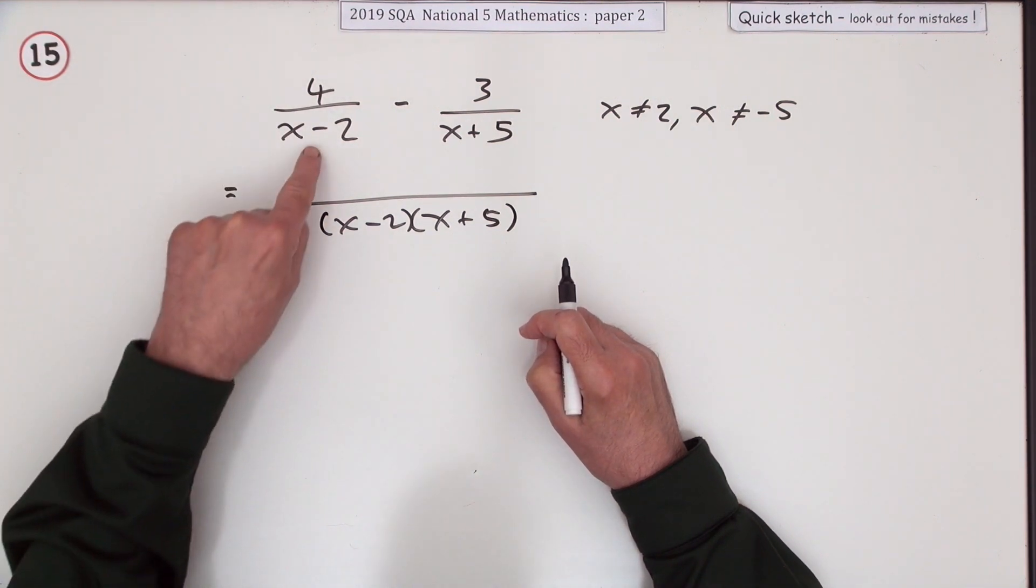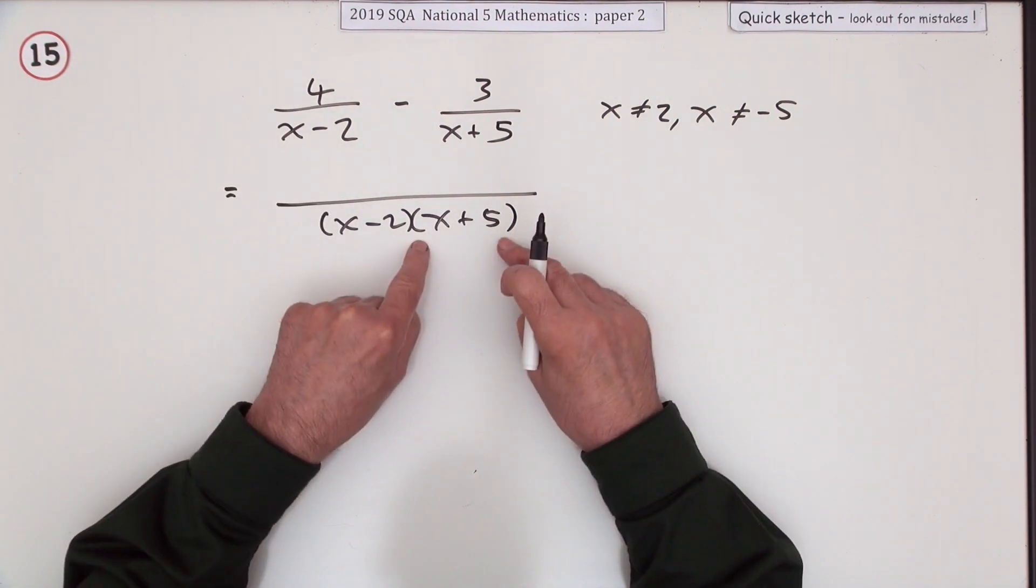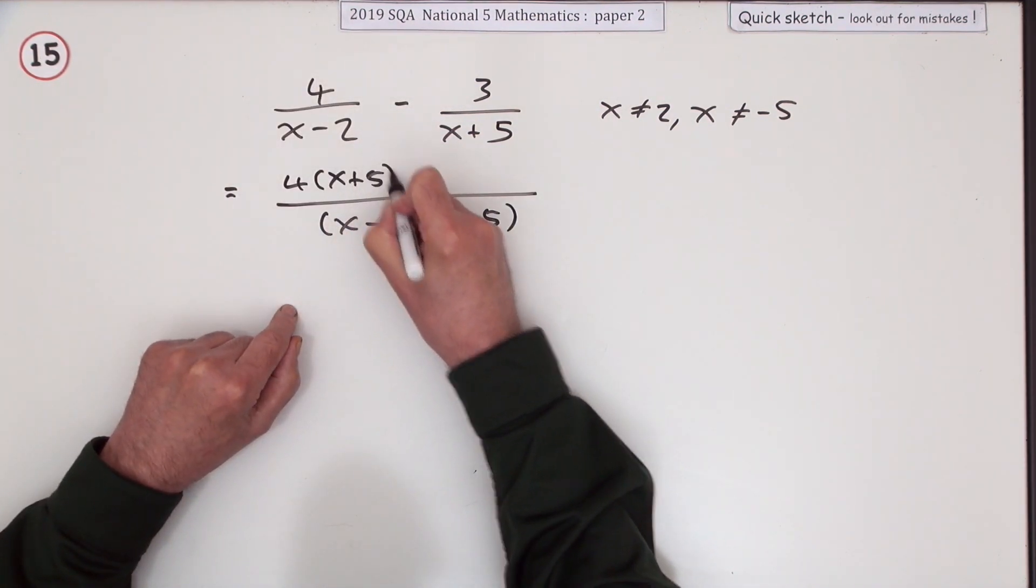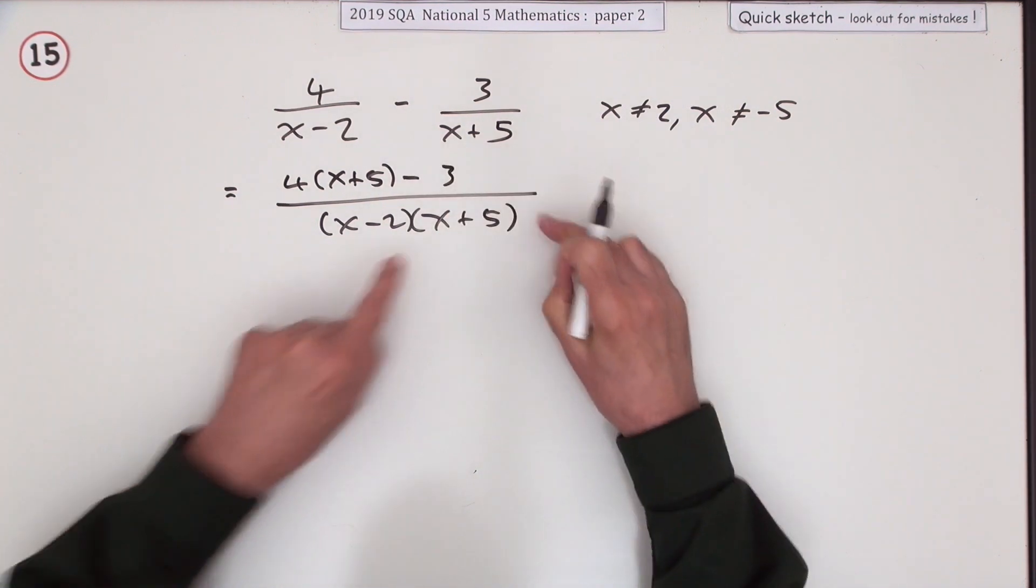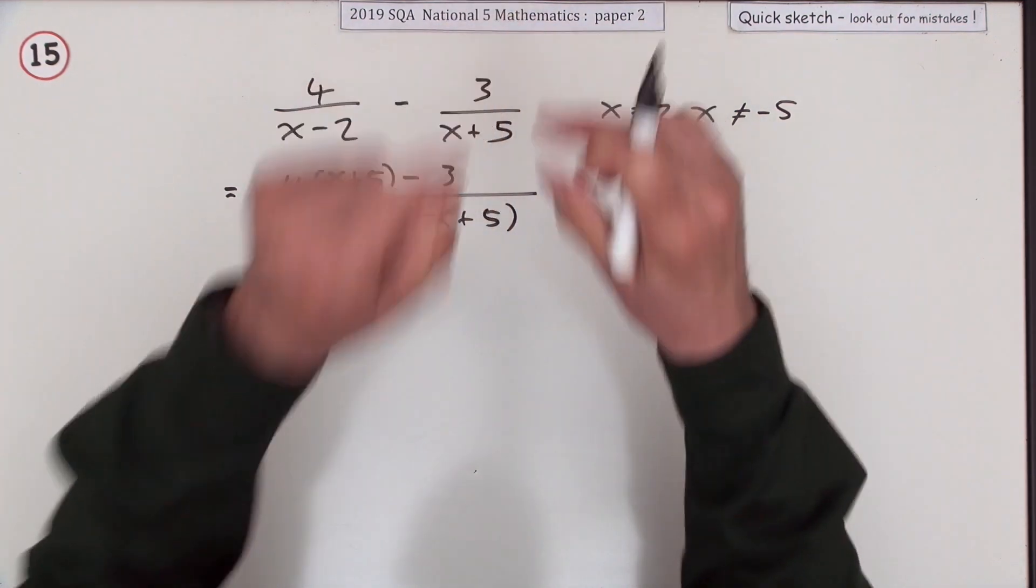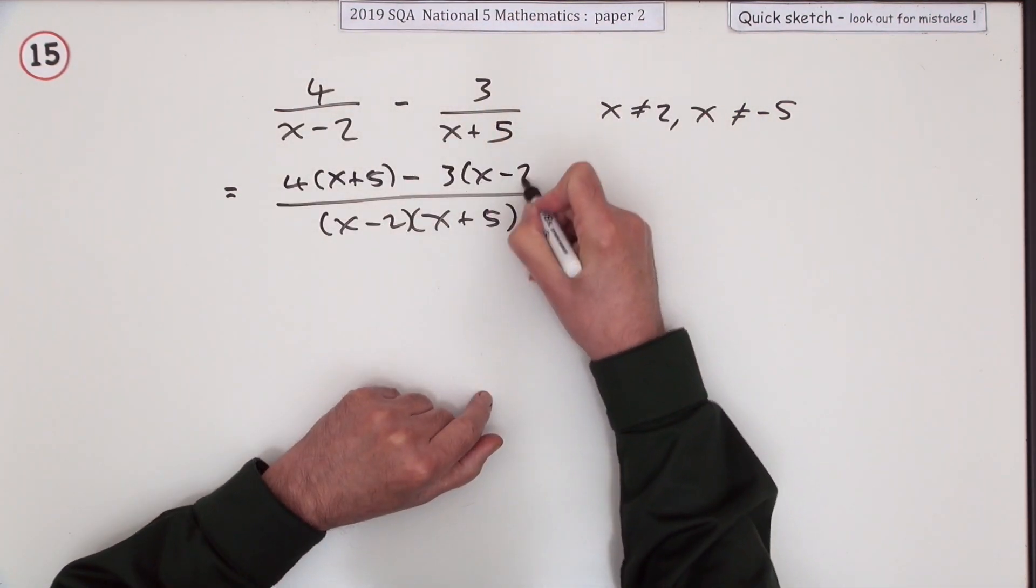You'll have to change the numerators accordingly. This denominator has been multiplied by X+5, so the top has to get multiplied by X+5. Minus - this denominator has been multiplied by X-2, so the top will also have to be multiplied by X-2.